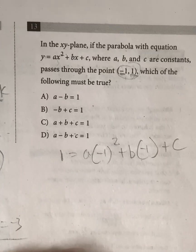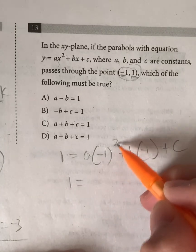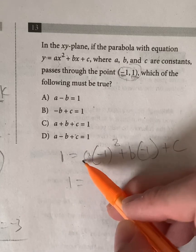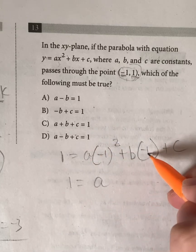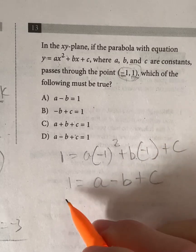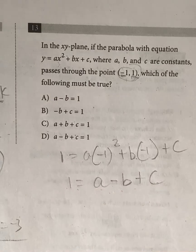So if we simplify this, this will give us 1 is equal to negative 1 squared is 1. Negative 1 times negative 1. So 1 times a is just a. b times negative 1 is equal to negative b. And then we have plus c. So 1 is equal to a minus b plus c.